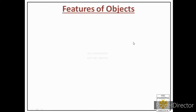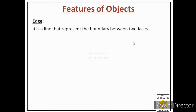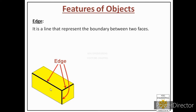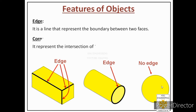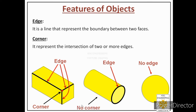Now let us talk about the important features of an object. First is an edge: it is a line that represents the boundary between two faces. For a cylindrical object there is an edge; for a round object there is no edge. Next is a corner: it represents the intersection of two or more edges. In case of cylindrical or round objects, we don't have any corner.